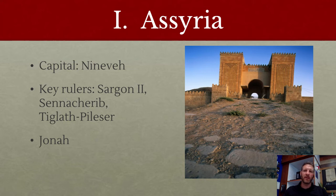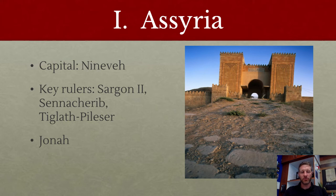Key rulers of Assyria: one is Sargon II — notice he named himself after Sargon the Great, the first uniter of the Sumerian city-states. Then we have Sennacherib and Tiglath-Pileser. Sennacherib is famous for conquering the northern ten tribes of Israel and then failing to conquer the south. Tiglath-Pileser helps remove and relocate those ten tribes so they lose their Jewish heritage.